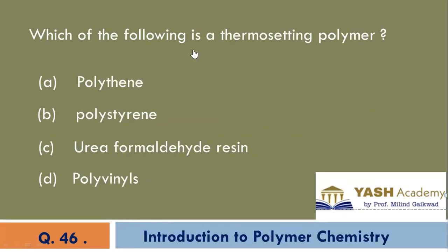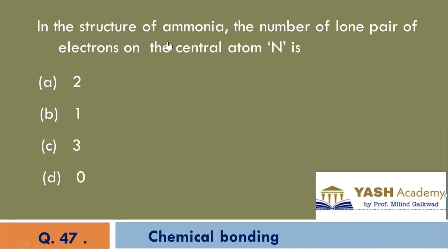Which of the following is thermosetting polymer? Thermosetting polymer, which when heated does not melt and when cooled becomes hard. C is the correct option, urea formaldehyde resin.